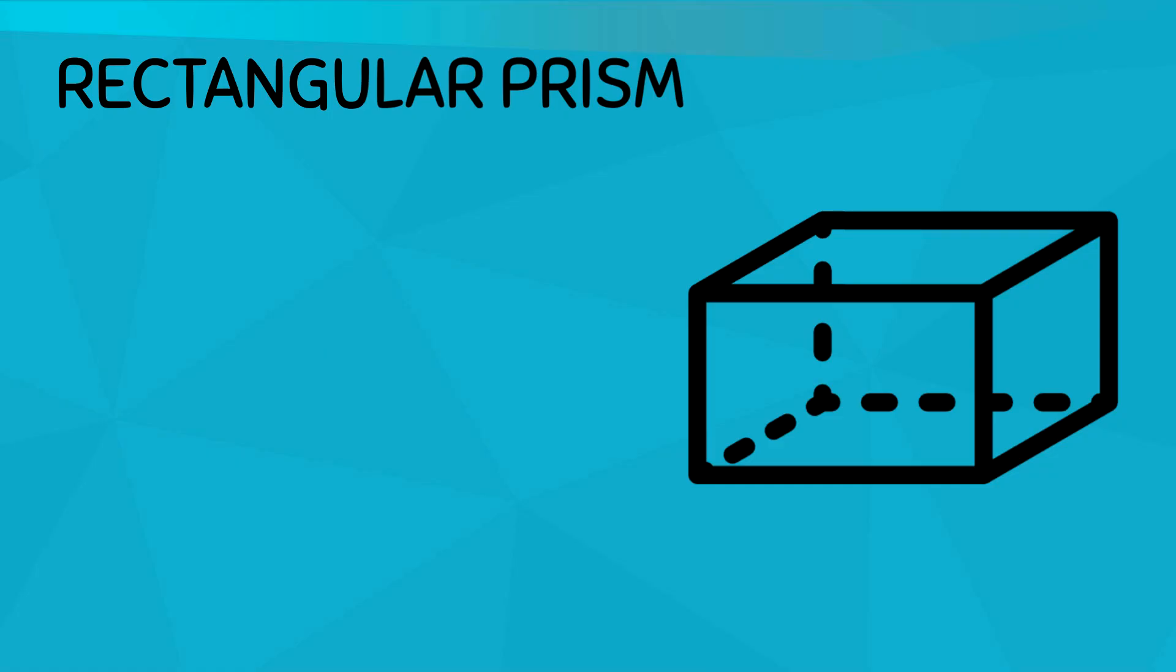Let's do some practice on this rectangular prism. Can you count how many vertices this shape has? Let's see, we have one, two, three, four, five, six, seven, and eight. Awesome!